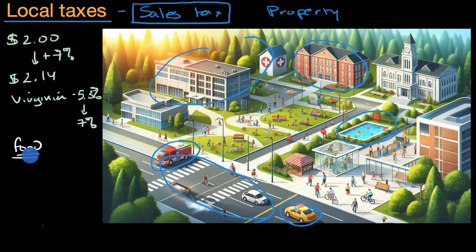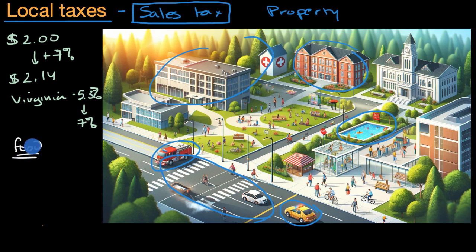Why would that be? Well, the town is saying everyone has to buy food, especially if they're cooking it themselves. But not everyone has to go to a restaurant — a restaurant is more of a luxury. So we'll tax the luxury more, but the necessity we will tax at a lower rate.